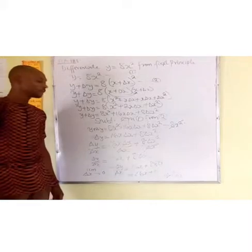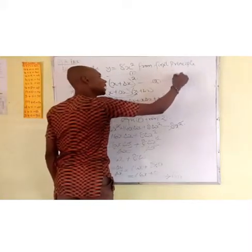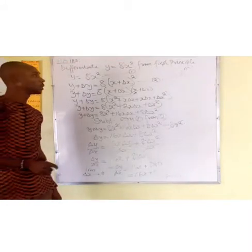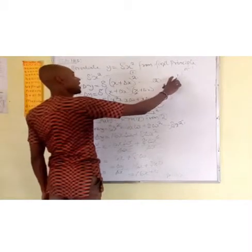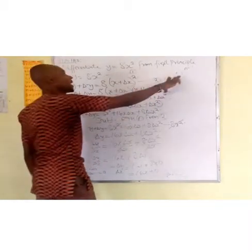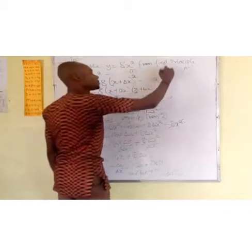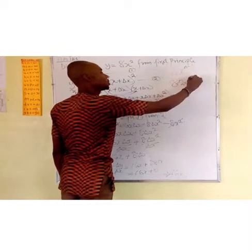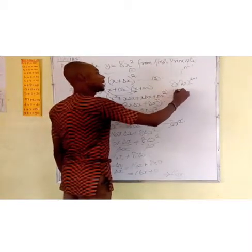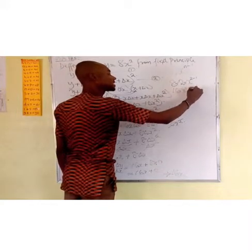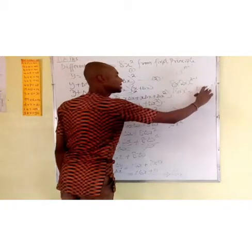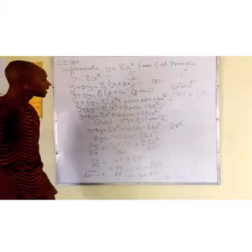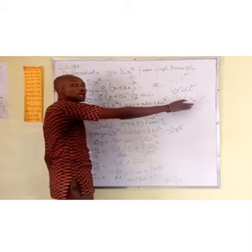Now, what do you do if you are in an exam? I would want you to use n·x to the power n minus 1. This is the general formula for solving calculus differentiation. Our n is represented by 2 and our coefficient is 8. So 8 times 2 times x raised to the power 2 minus 1 gives us 16x to the power 1, which is exactly the same answer we have using first principles. So if you are in an exam, it is simpler to use this general formula.